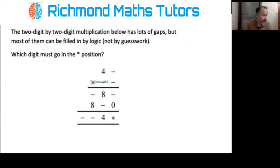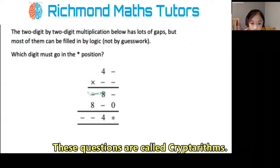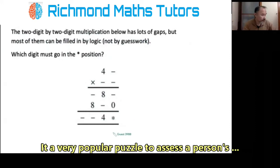So, four something times something equals something eight something, eight something zero equals something something four star. For this column, there's only one missing number, which is this one here.